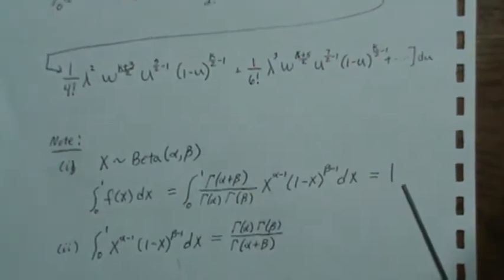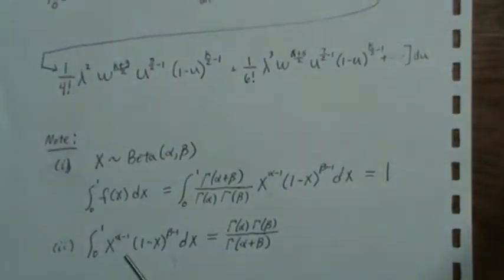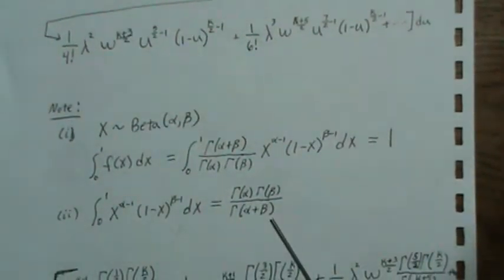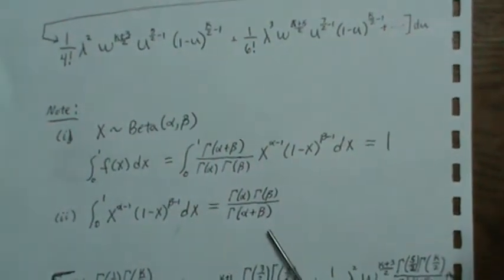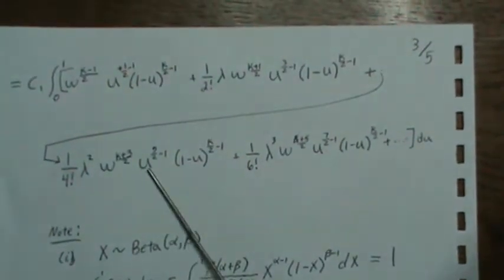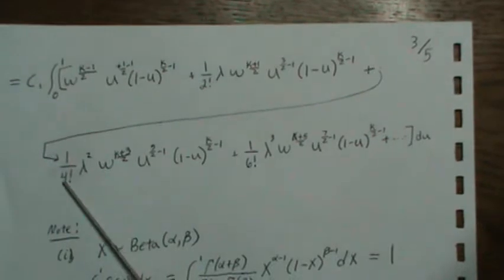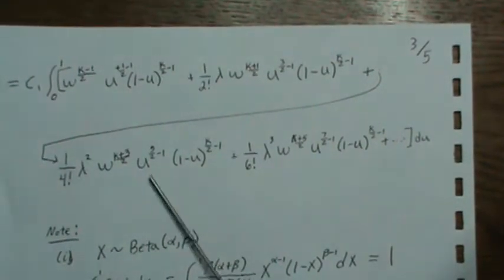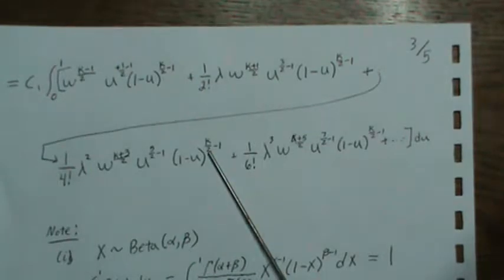But these are constants so you can take them out front and then when you integrate this you get the ratio of these gamma functions. So each integral here, these are constant and this is a beta function with alpha that and beta that.